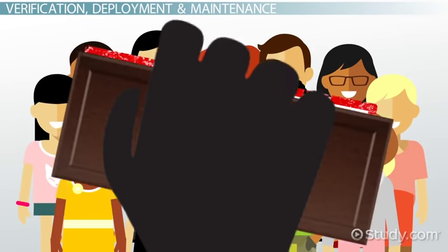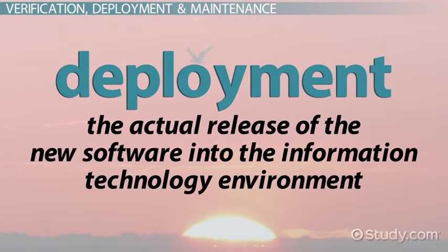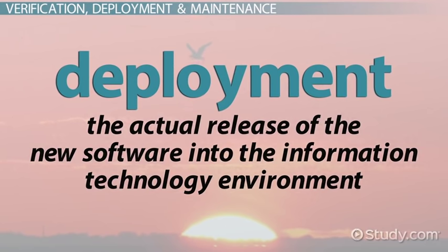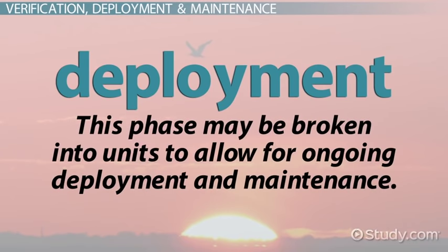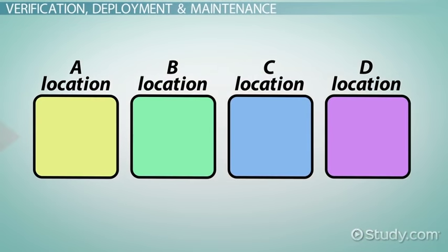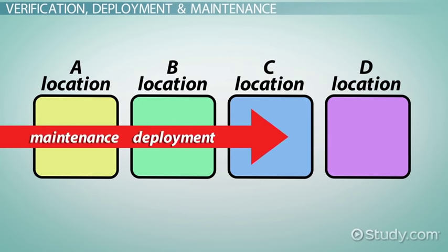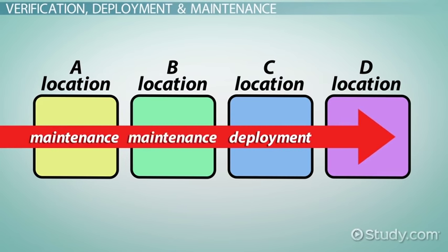Once the software is fully verified and approved for release, the deployment phase is the actual release of the new software into the information technology environment. The deployment phase may be broken into units to allow for ongoing deployment and maintenance. For example, the software may be deployed by location — once a location is fully deployed, it moves into the maintenance phase while another location begins the deployment phase.